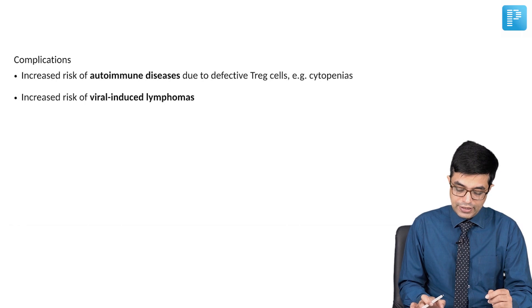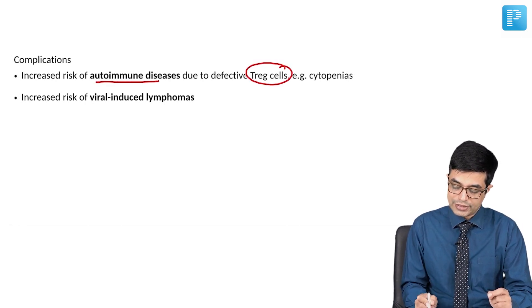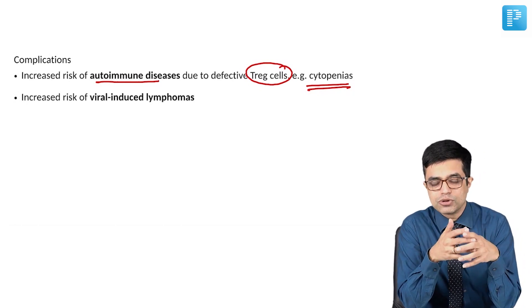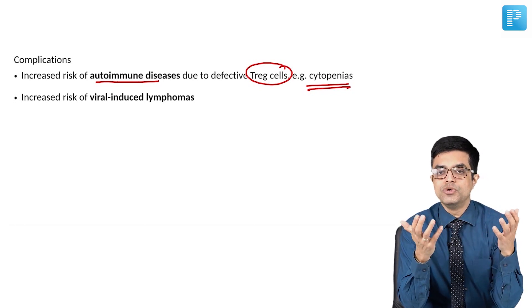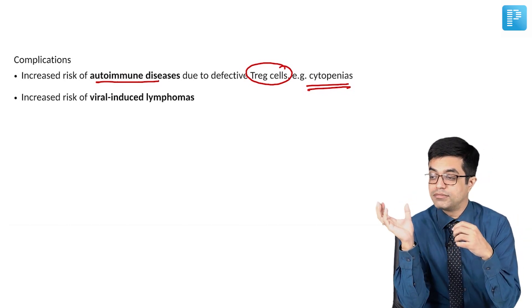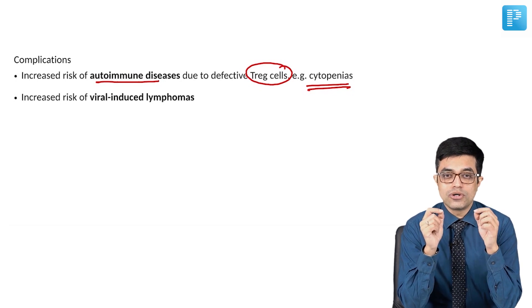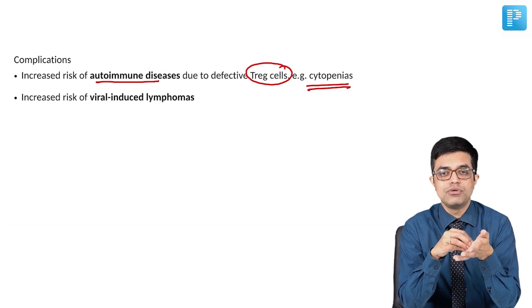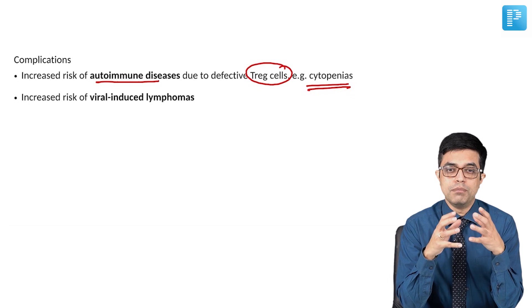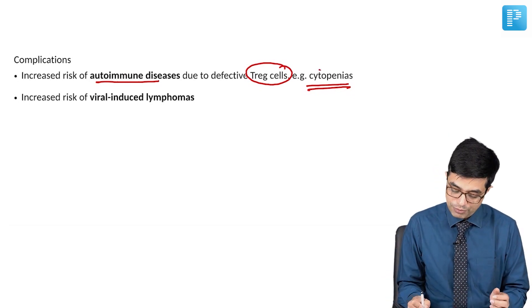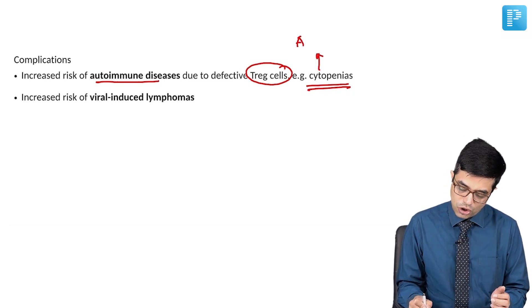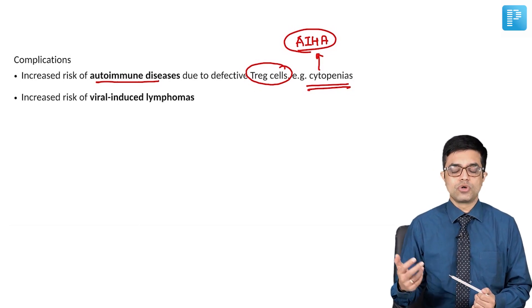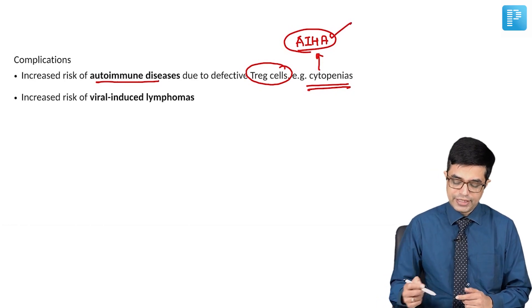Regarding complications: there is increased risk of autoimmune diseases due to defective T regulatory cells — for example, cytopenias. In Wiscott-Aldrich syndrome, deficiency of T lymphocytes means deficiency of regulatory T cells, which normally destroy autoreactive T cells. When regulatory T cells are deficient, autoimmune phenomena become active, leading to high risk of developing cytopenias — particularly autoimmune hemolytic anemia. Immune thrombocytopenia and immune neutropenia can also occur.